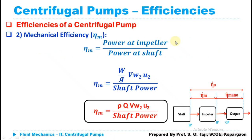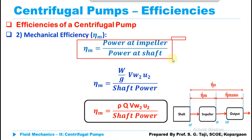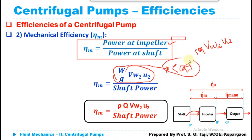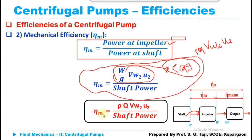The second efficiency is mechanical efficiency, which is the ratio of power at the impeller divided by power at the shaft. Whatever power is at the shaft will not be fully available at the impeller directly — there are mechanical losses due to wearing and tearing effect. Mechanical efficiency is given by power at the impeller, where the power at the impeller equation is: ρQ × Vw2 × u2, which can also be written as W/g × Vw2 × u2 where W = ρQg. This is divided by the shaft power to give the mechanical efficiency.